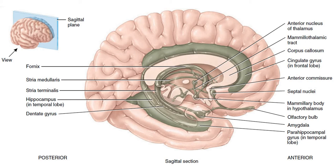You may have come across the hippocampus in clinical exercise physiology when referring to exercise and dementia, because it is typically the first affected region of the brain in Alzheimer's disease. We can use the model of Alzheimer's disease to understand the role of the higher nervous system — that's everything from the brain stem upwards, the actual brain itself — in human movement.